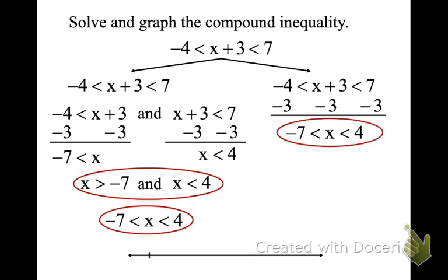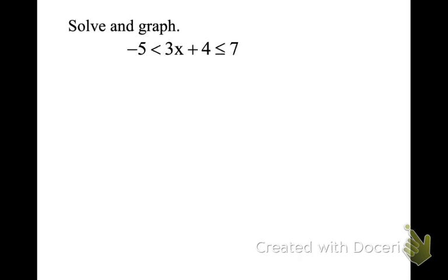It says solve and graph. When you write your graphs, you do not need any numbers other than what you're graphing and 0. We're starting at negative 7 — it's an open circle — all the way up to 4 — it's an open circle. Notice my numbers are above the line and the actual graphing part is below the line. This is how I expect your number lines — not with 10 or 11 different numbers.